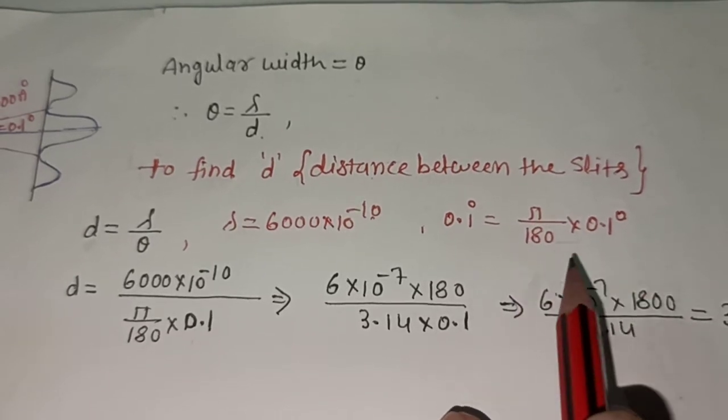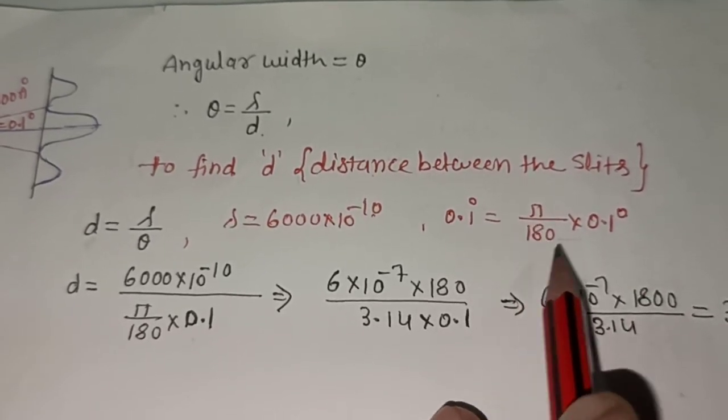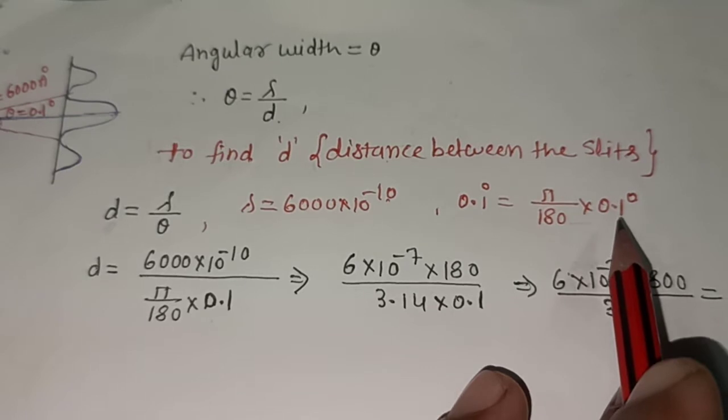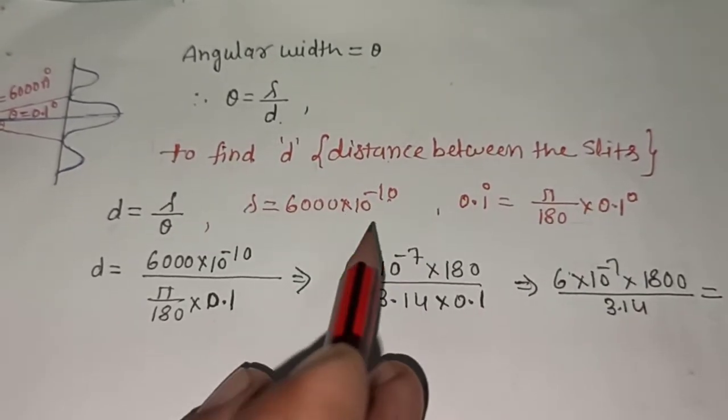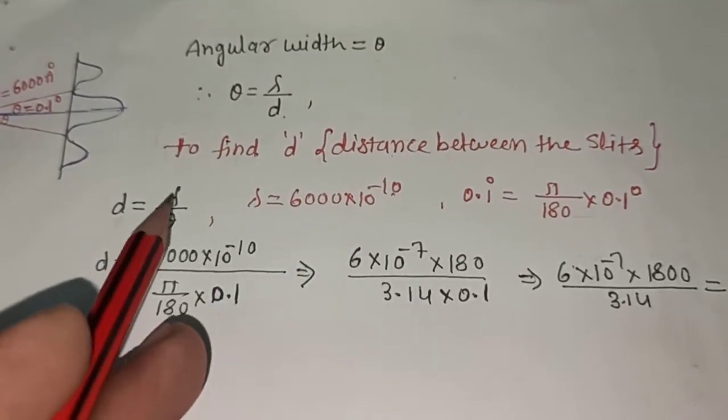So this is the formula for radian: pi divided by 180 into 0.1 degree. So we will substitute 0.1 degree in this place.